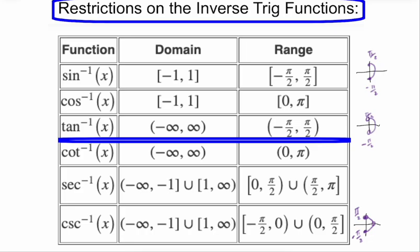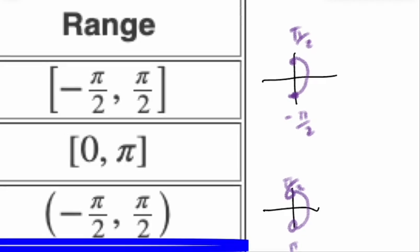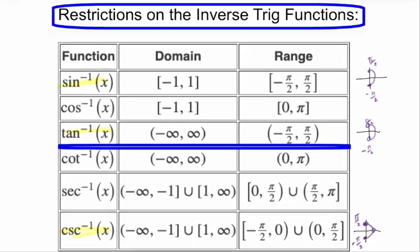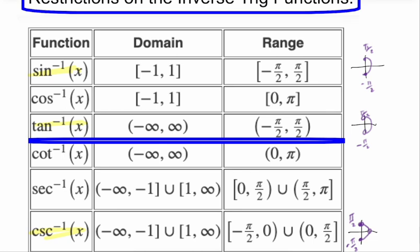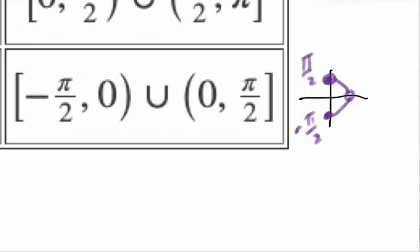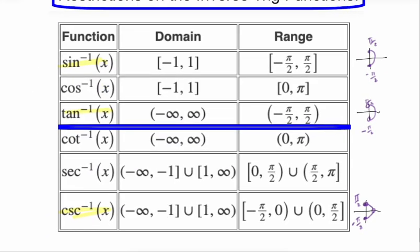Sine, tangent, and cosecant kind of go together — we're going to look for answers in the first quadrant and the fourth quadrant. We call the first quadrant the positive answers and the fourth quadrant the negative answers. Sine uses all values in that range; tangent has open circles at the π/2 endpoints; and cosecant has just an open circle at zero.